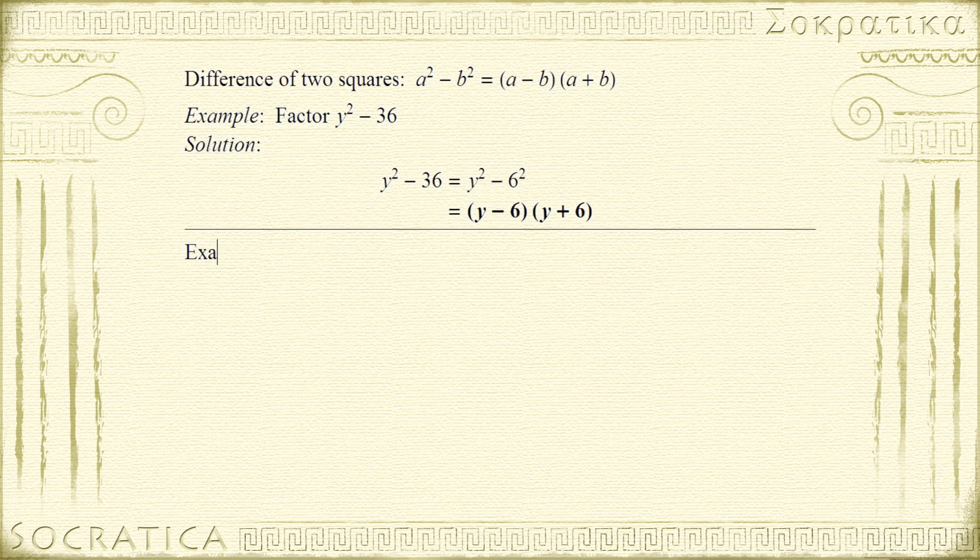Now that was fairly straightforward. Let's see a more subtle example. Let's factor 4x² - y⁴. Let's focus on the first term, 4x². That can be written as 2² · x². We can rewrite this as (2x)². So we have (2x)² - y⁴.